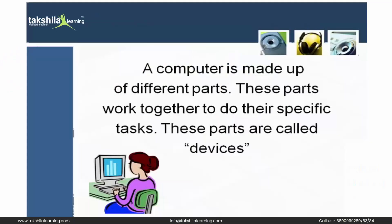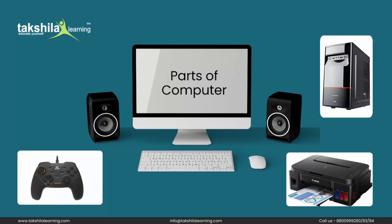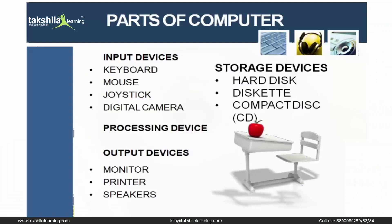A computer is made up of different parts. These parts work together to do their specific tasks. These parts are called devices. All the parts of the computer are known as devices. These devices are categorized into three parts: input devices, output devices, and storage devices.